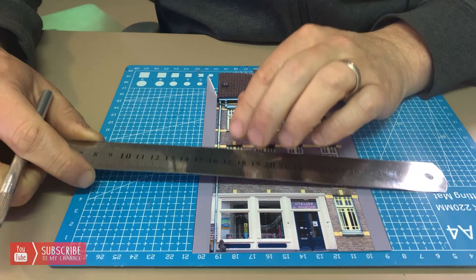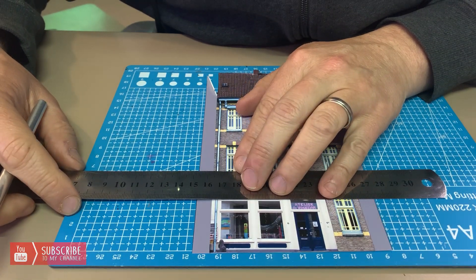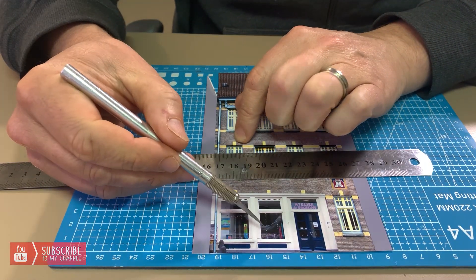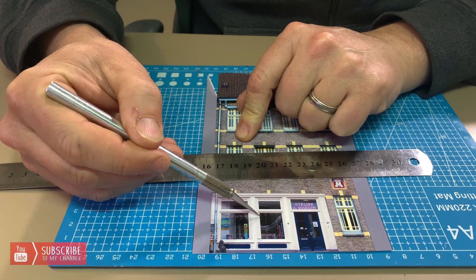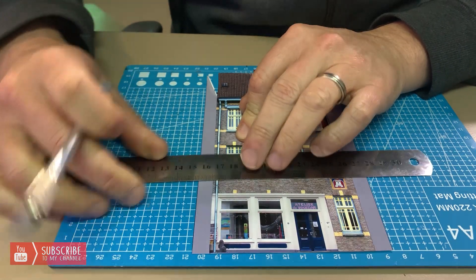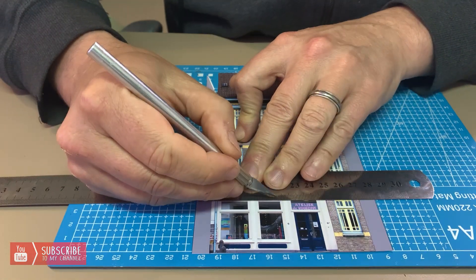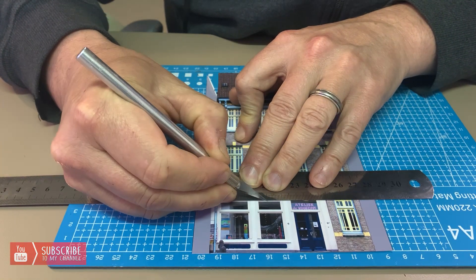What you need to do is, we've got the window frame and the sashes there. So we're only interested in cutting out the glazing part of it. Don't be too concerned about what's behind it.